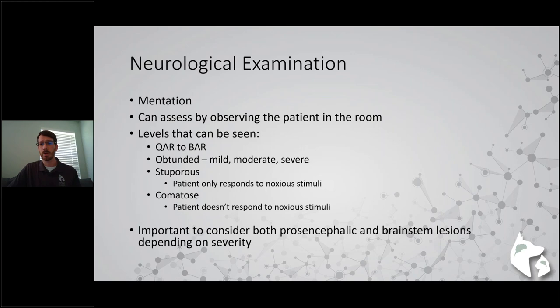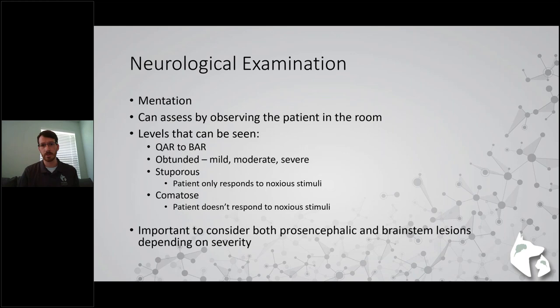When talking about mentation or sensorium, it's important to consider both prosencephalic or forebrain lesions, but also brainstem lesions. Generally with brainstem lesions you'll see more severe changes - patients that are stuporous or comatose - because there is the ARAS system, the ascending reticular activating system, which promotes alertness and travels within the brainstem. When you get lesions there, you typically get more severe changes in mentation.